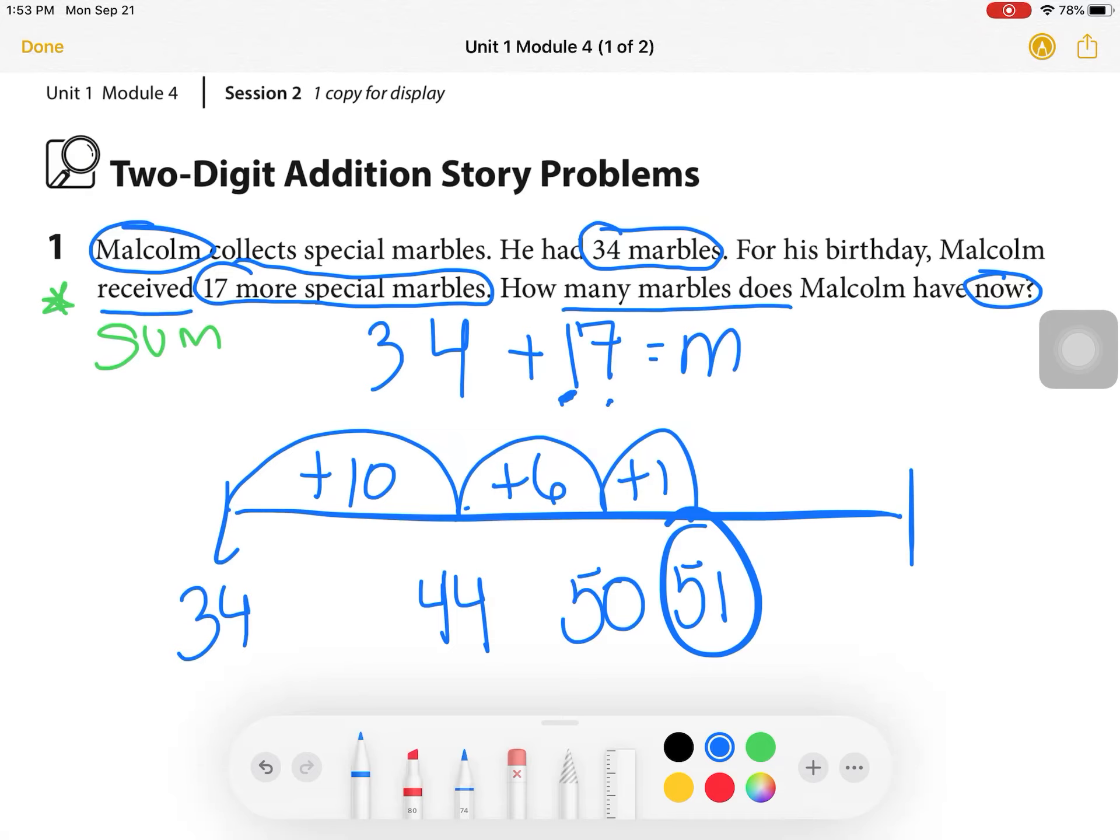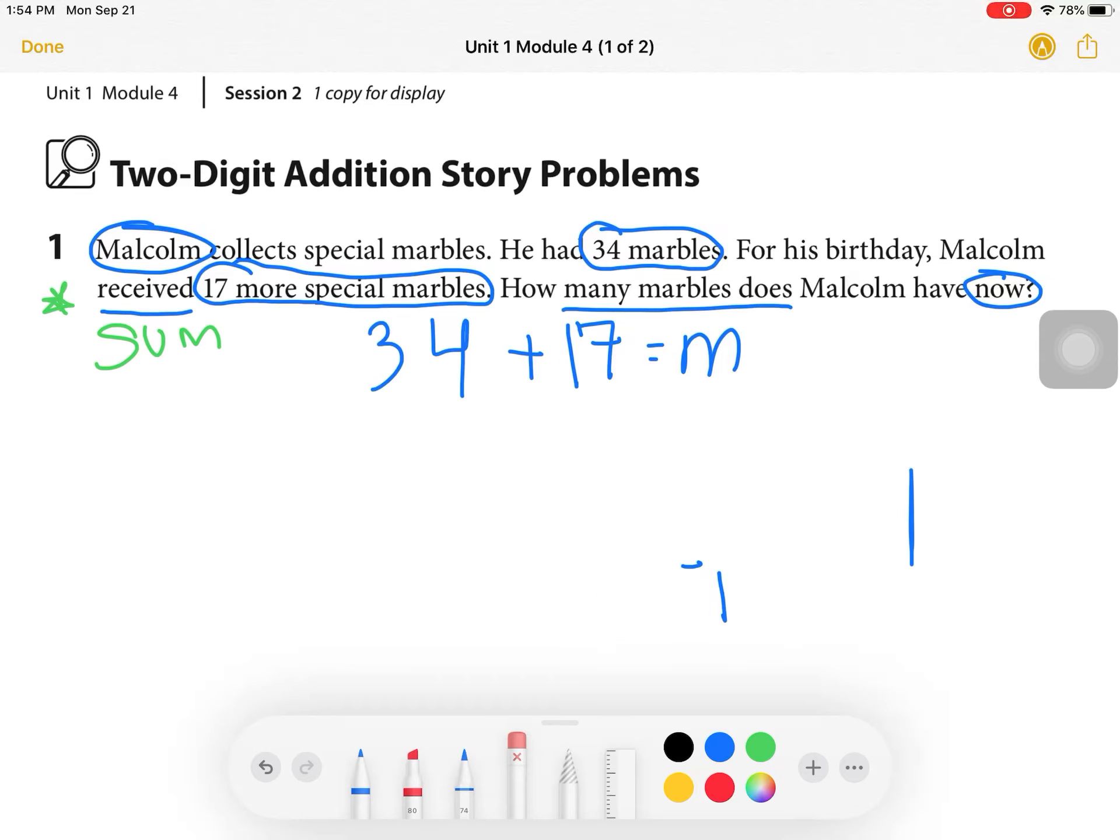As you notice, all of these strategies are getting me all to the same answer. That's what I love about math. Because sometimes when we do math, it really doesn't matter how you get to that answer. It's really the beauty of your math brain and how you continually make mistakes and figure out how to do these things on your own.